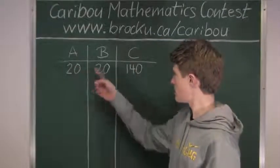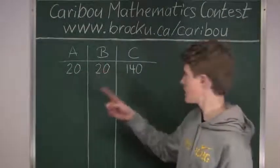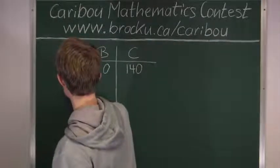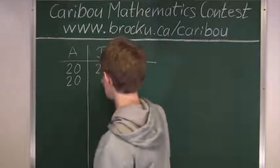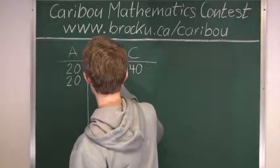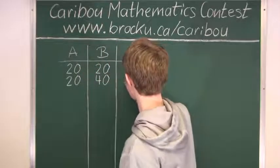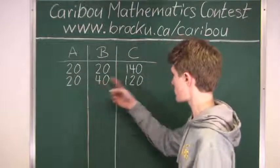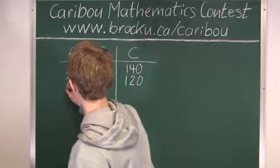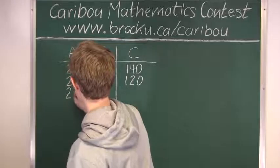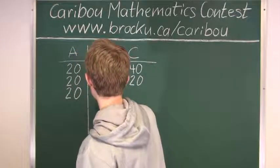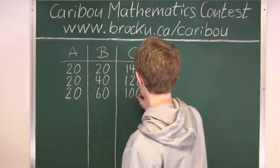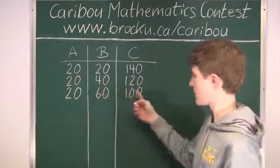So now, if we can still keep A, because for B we can go up by 20, and for C we can go down by 20. Now we can see that we can keep on going. Add 20 here, go down by 20 here. Now we can see that we can keep on going. Add 20 and subtract 20.